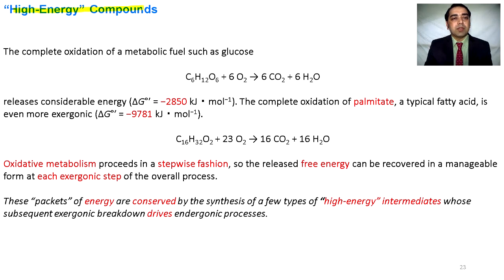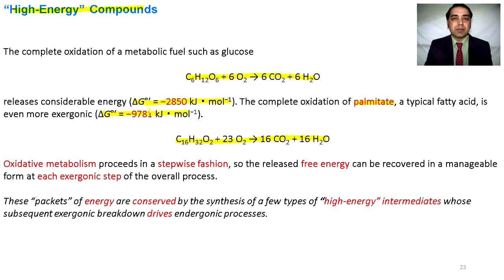Let's talk about high-energy compounds. Glucose is broken down into carbon dioxide and water with a standard free energy change of −2850 kJ/mol. For palmitate, oxidation produces −9781 kJ/mol of energy, which is much higher than that of glucose. During oxidative metabolism, energy is released in a stepwise fashion and conserved in the form of high-energy intermediates. Whenever energy is required, these high-energy intermediates drive the formation of ATP.